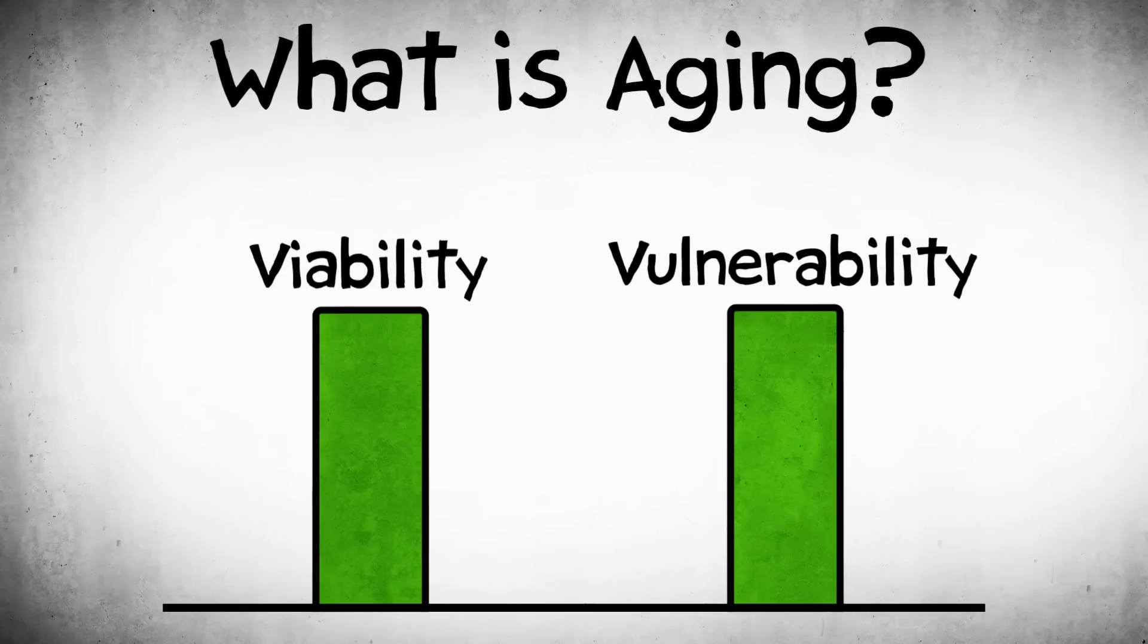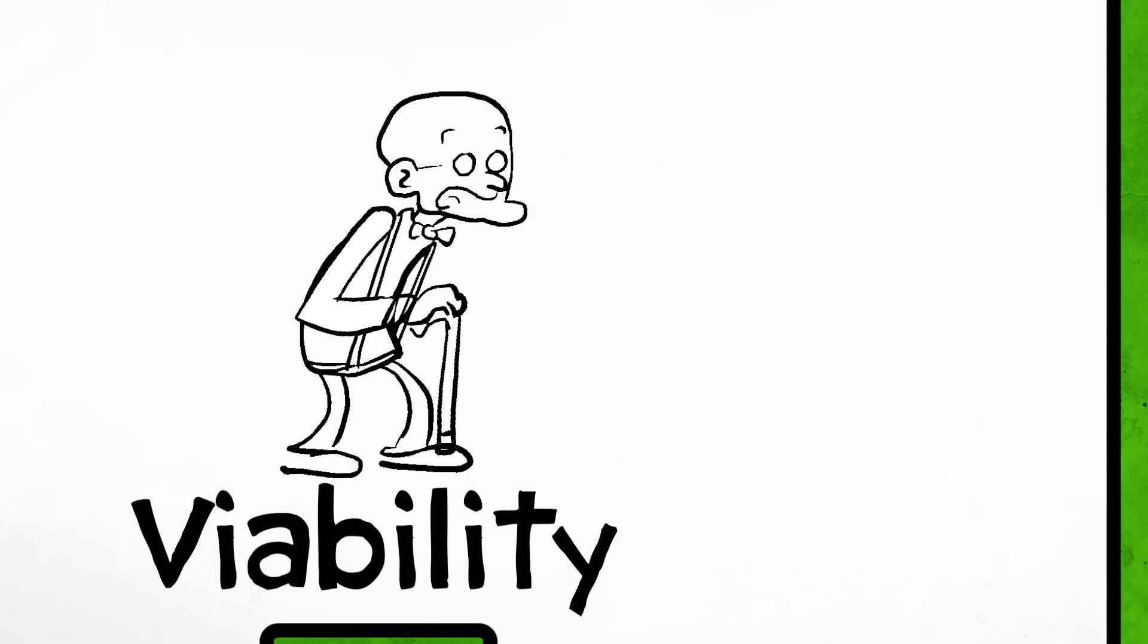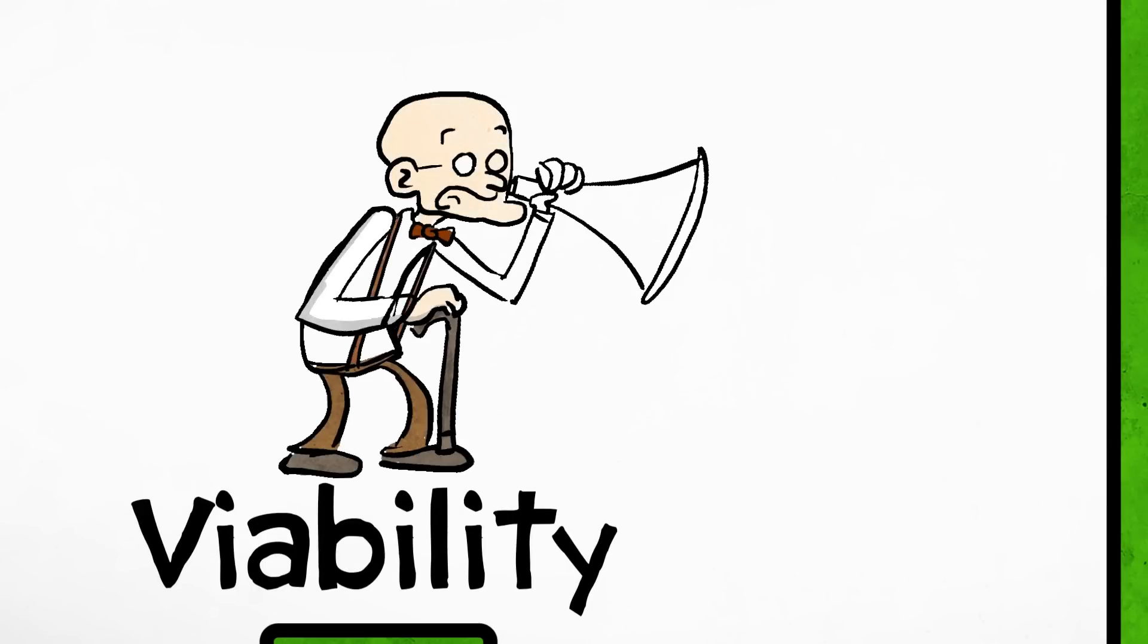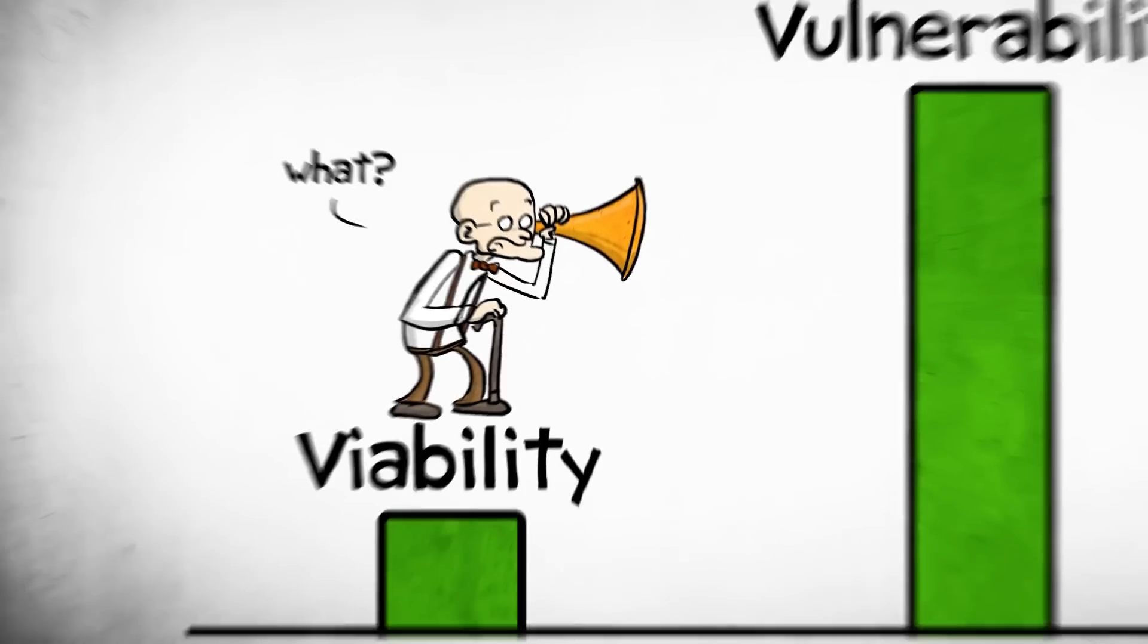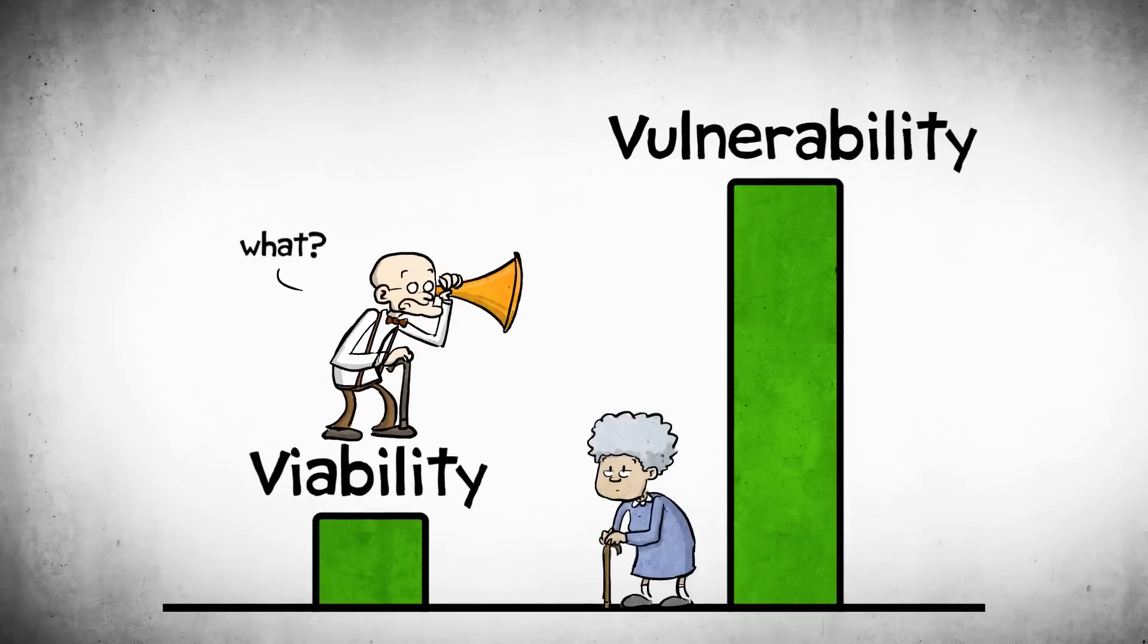Aging is an age-related decrease in viability and increase in vulnerability. It means that your capacity to respond to external stresses and your capacity to function decreases with age, so you become more vulnerable to diseases. One of the major causes of mortality in the elderly is influenza, which is just a common flu.